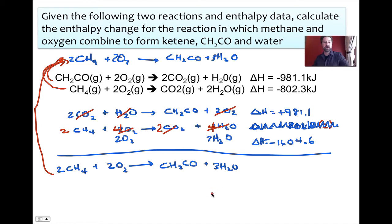Now, the last thing we've got to do is we need to calculate. We need to calculate, in this case, 981.1 kilojoules per mole, plus negative 1604.6 kilojoules per mole. Go ahead and hit pause. I'll do the same. We'll come back and we'll see if our totals match. And my calculator screen is showing negative 623.5 kilojoules for delta H.